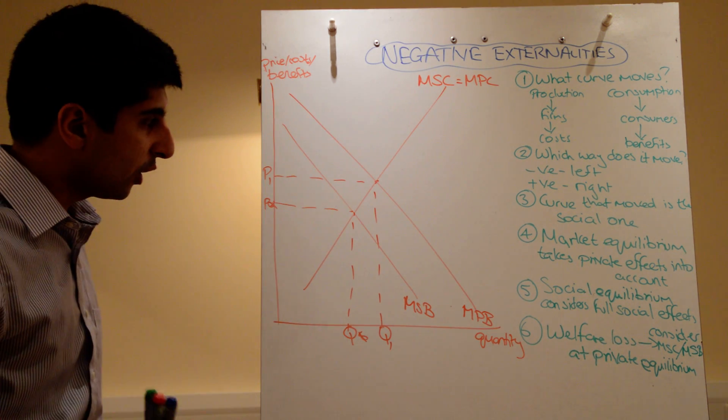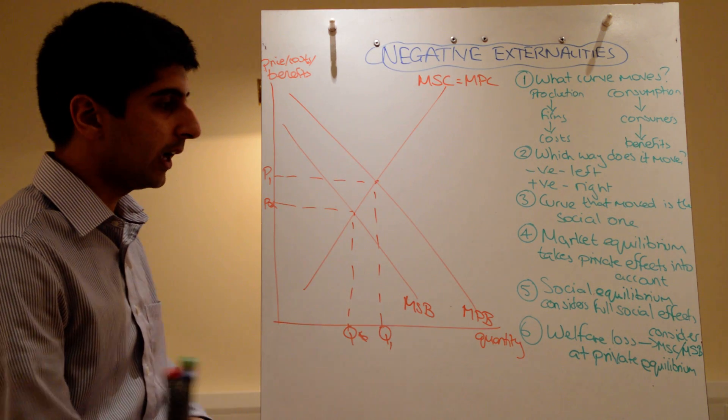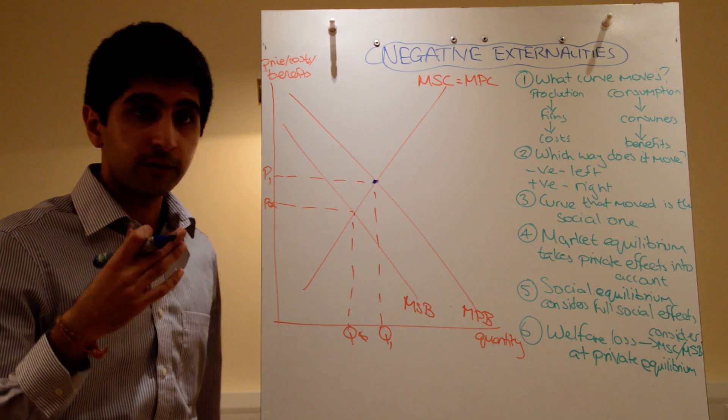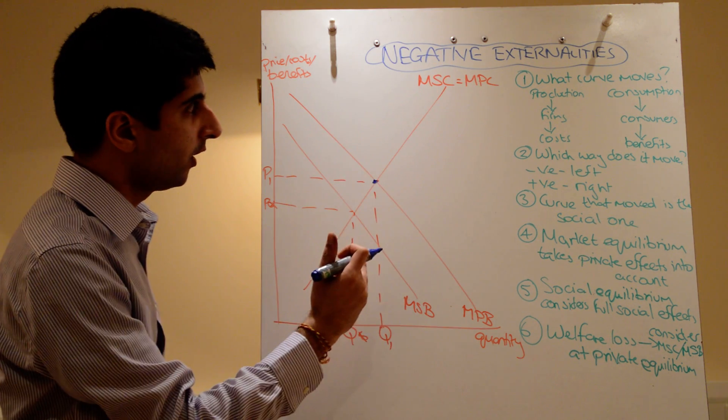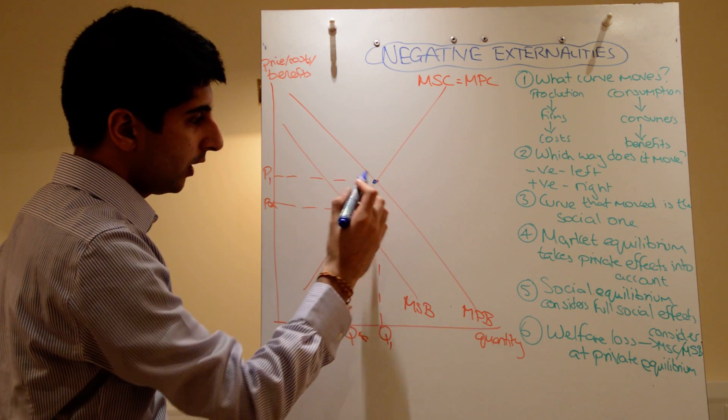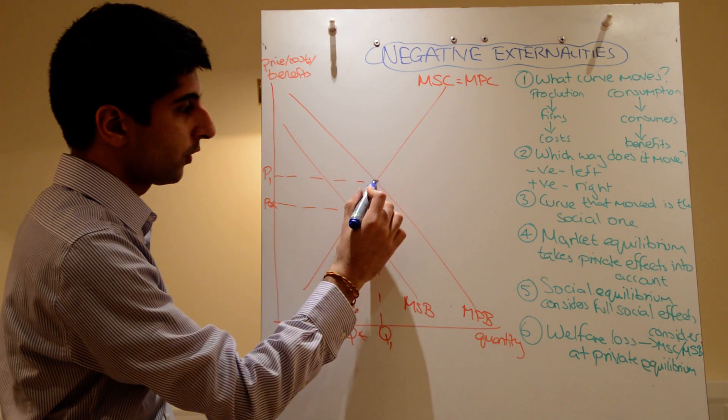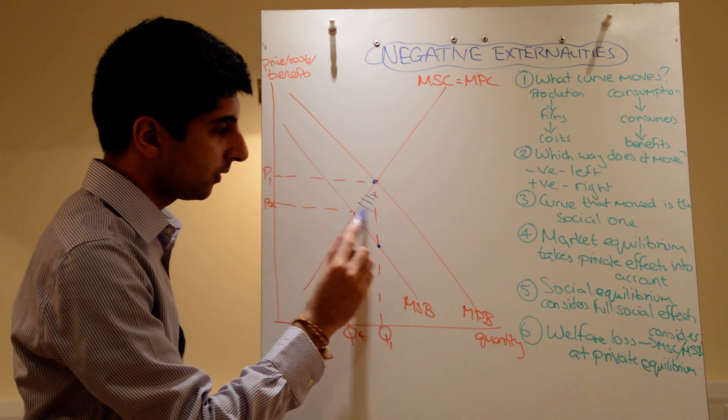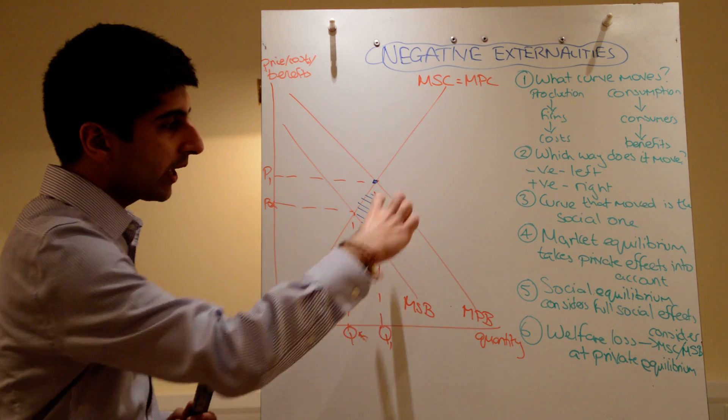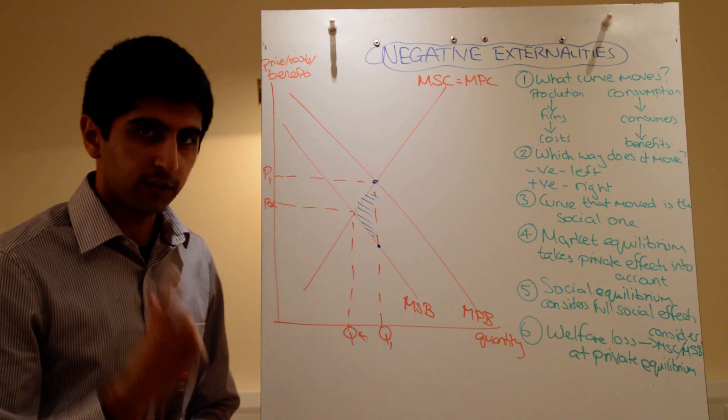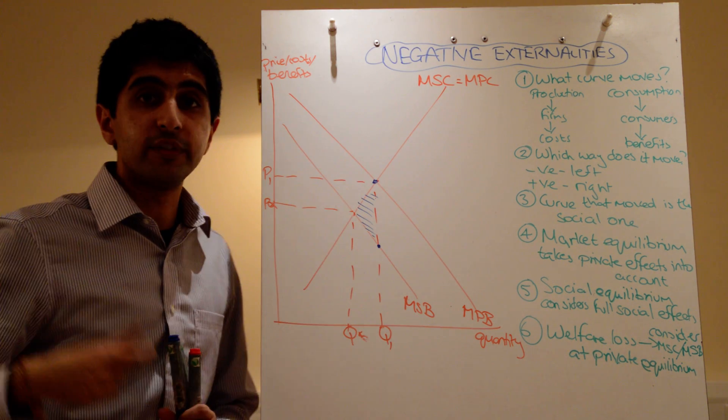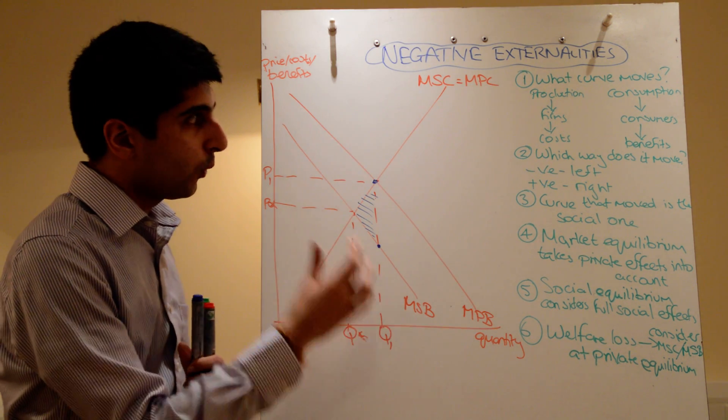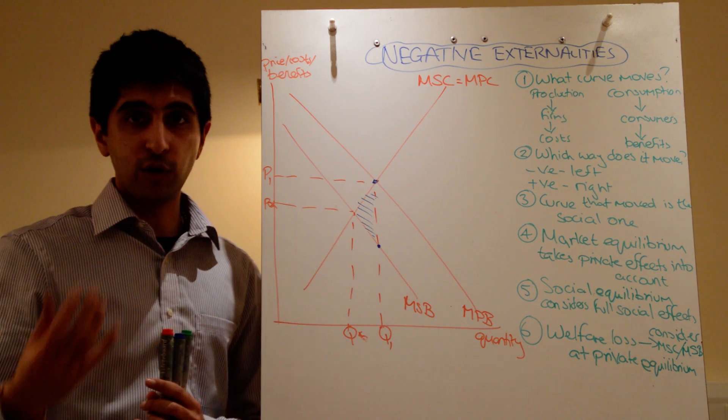And finally, the welfare loss. To work out the welfare loss, how much is society being harmed by this misallocation? Go to the market equilibrium, which is here, and work out where the social costs and the social benefits are at that level of production, Q1. Well, at the red dot, that's the level of social cost, whereas at this one, that's the level of social benefit. So the costs are higher than the benefits for all of these units. The way you do it is you work out the vertical distance between social benefit and social cost, and then you shade in the triangle which points towards the social optimum.